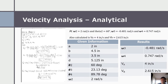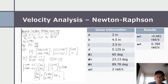Moving on to the analytical section for velocity analysis. At W two equals 2 radians per second and theta two equals 60 degrees, W three was negative 0.481 radians per second and W four was 0.747 — pretty close to the graphical numbers. Using the Newton-Raphson method, W three was negative 0.481 and W four is 0.789, which is also pretty spot on to the others.